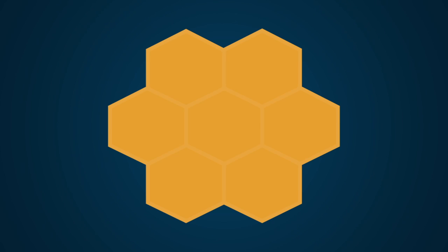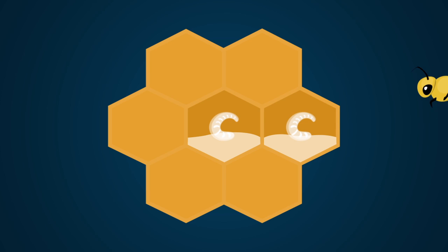The brood comb is made up of cells, within which the bee larvae develop. Once the larvae is five days old, nurse bees cap each cell.